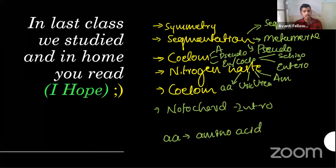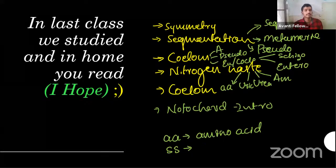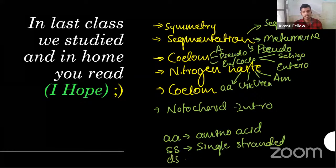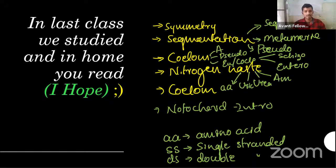Do you know the meaning of 'SS'? We normally use it regarding DNA and RNA molecules. 'SS' means single-stranded, and 'DS' means double-stranded — double lines or single lines. In the same manner, we write amino acid as 'AA'. Remember these abbreviations.